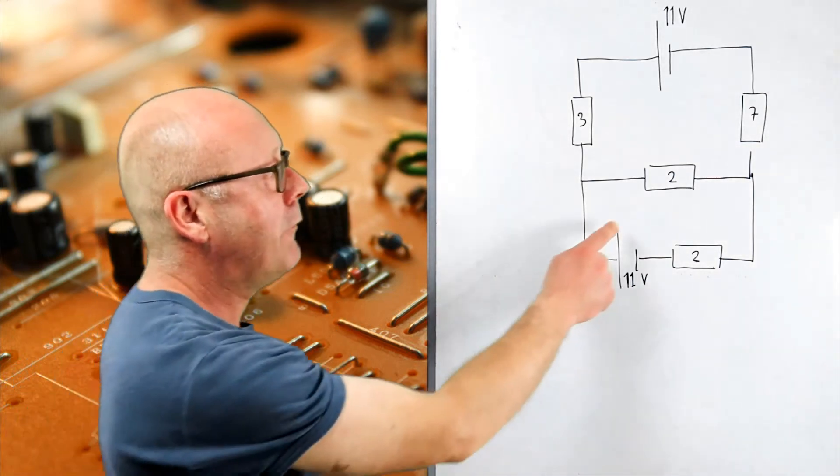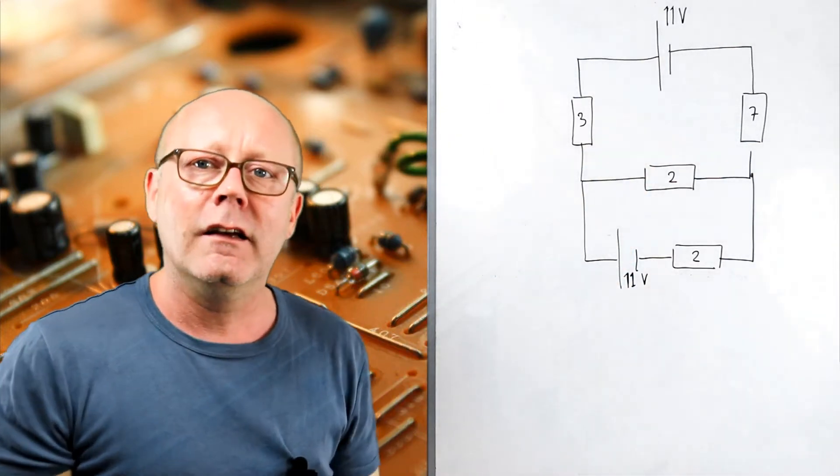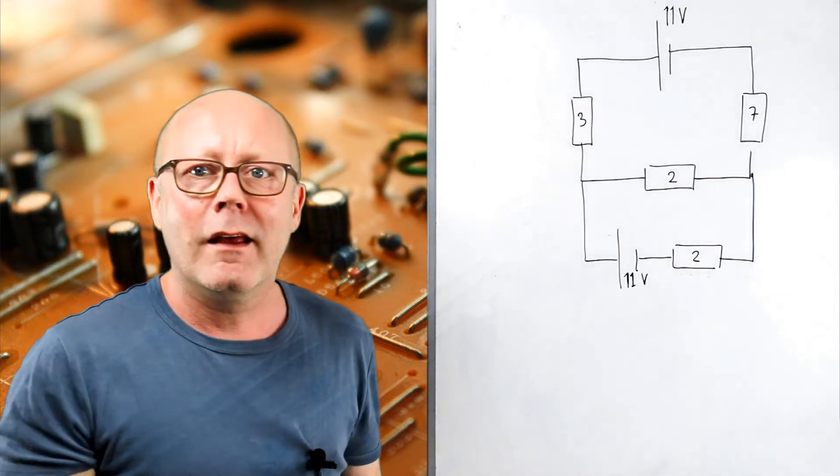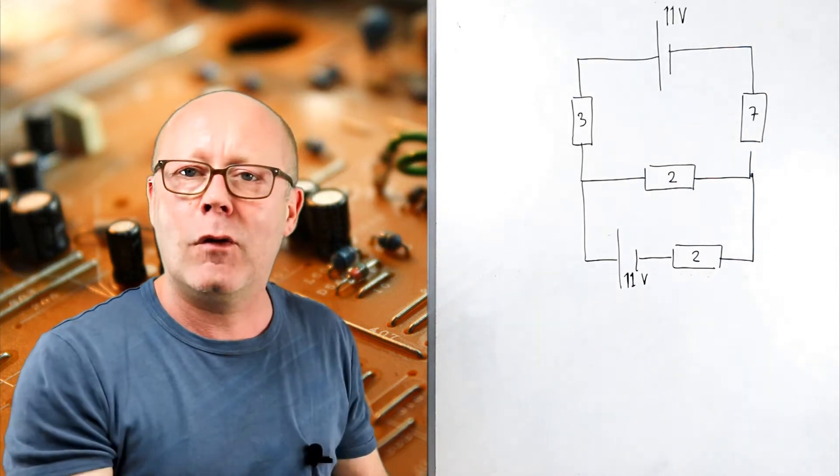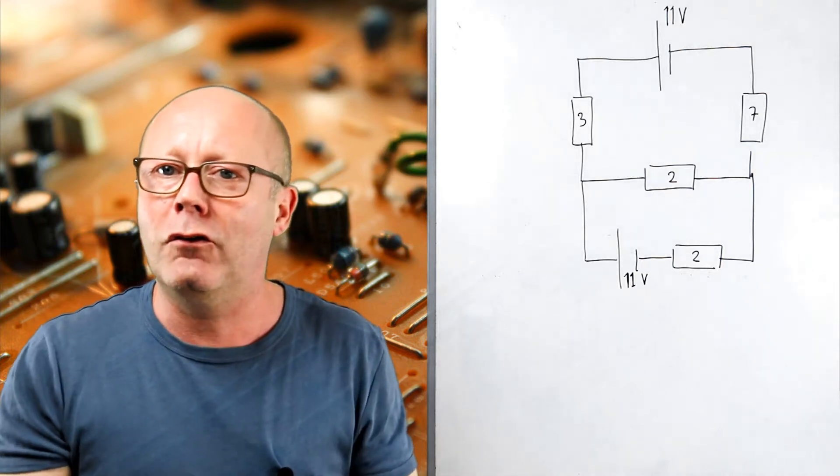Today we are going to solve this circuit. Note here that we have two batteries. Normally in the other circuits I've presented and that you usually find in exercise textbooks, there's only one battery generating one current. Therefore you calculate the equivalent resistance of the circuit, calculate the main current and you continue from there.